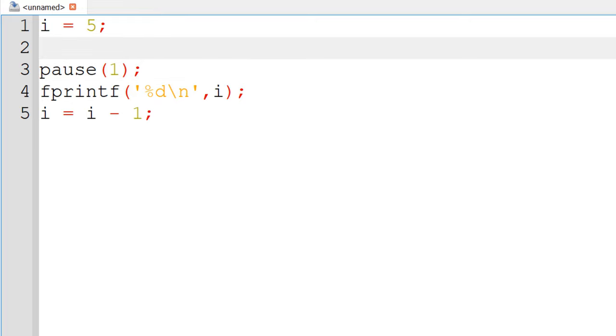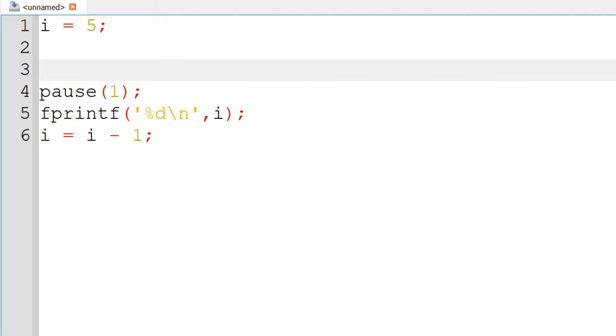Then, you can wrap this block of the Octave and MATLAB commands with the while loop. Remember, you want to count down until it reaches 0 starting from 5. You can work with while i greater than minus 1 and finish your while loop daemon with end.